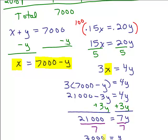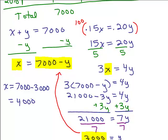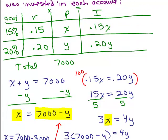So now that I know what Y is, right, Y is 3,000, I could plug that back in here to figure out what X is. So X will be 7,000 minus 3,000 or 4,000. So X is 4,000 and Y is 3,000. Let's go back up here and write that down. X is 4,000 and Y is 3,000. For X we got 4,000 and Y we got 3,000.